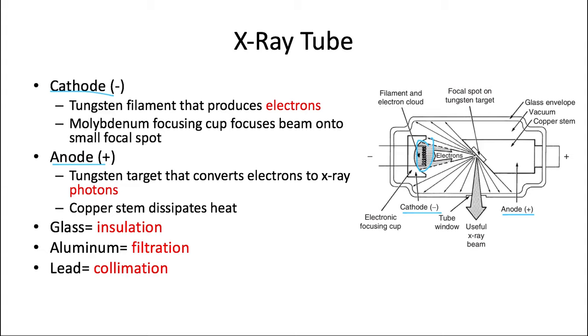The anode consists of a tungsten target that converts the electrons into x-ray photons by either bremsstrahlung or characteristic production. Interestingly, the electrons become about 99% heat and only 1% photons. So we have a copper stem that conducts electricity and has a high melting point to help dissipate that heat.